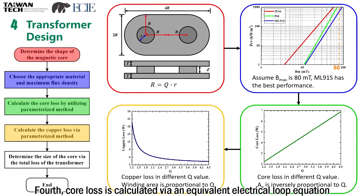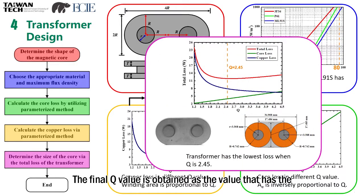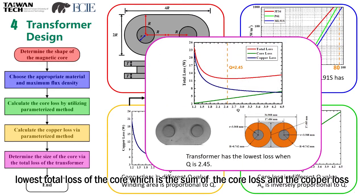Fourth, core loss is calculated via an equivalent electric loop equation. After that, core loss for different Q values, which is inversely proportional to the effective area of the core, is obtained. The final Q value is obtained as the value that has the lowest total loss, which is the sum of the core loss and the copper loss.